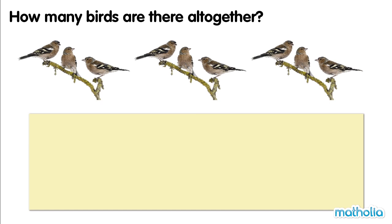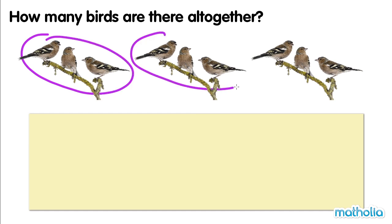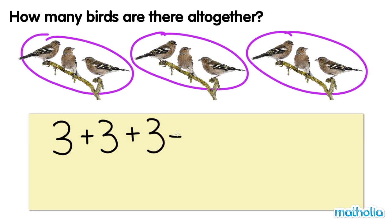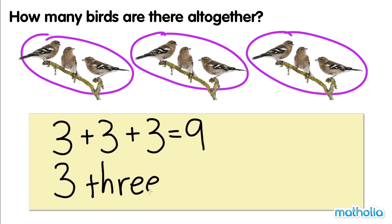How many birds are there altogether? There are three groups of birds. Each group has three birds. Three plus three plus three equals nine. Three threes are nine. There are nine birds altogether.